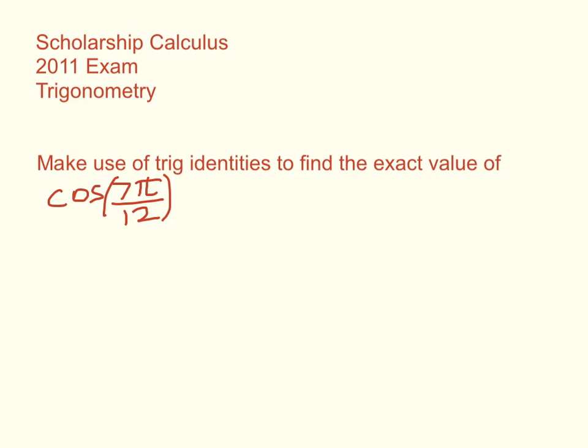Kia ora, year 12 and 13. In case you're not sick of trigonometry, here is some scholarship calculus trig we'll have a look at. We'll be going over these two in our scholarship session on Wednesday. The first question is really a warm-up that I think probably fits better than the three, but we'll do it anyway. Make use of trig identities to find the exact value of cos 7π/12.